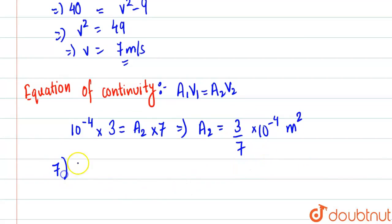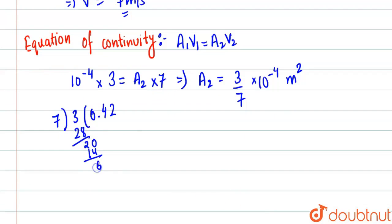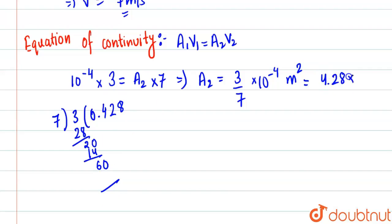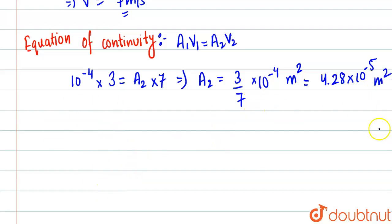In decimal form, dividing 3 by 7: 7 times 4 is 28, 7 times 7 is 49, 7 times 8 is 56. So we conclude it will be 4.28 into 10 to the power minus 5 meter square. In points and in fraction, this is our final answer.